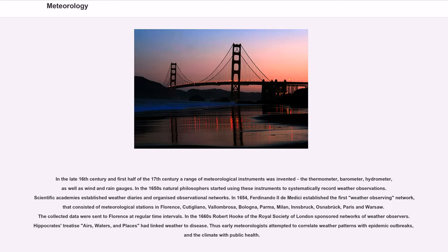In the late 16th century and first half of the 17th century a range of meteorological instruments was invented: the thermometer, barometer, hydrometer, as well as wind and rain gauges. In the 1650s natural philosophers started using these instruments to systematically record weather observations. Scientific academies established weather diaries and organized observational networks. In 1654, Ferdinando II de' Medici established the first weather-observing network, that consisted of meteorological stations in Florence, Cutigliano, Vallombrosa, Bologna, Parma, Milan, Innsbruck, Osnabrück, Paris, and Warsaw.